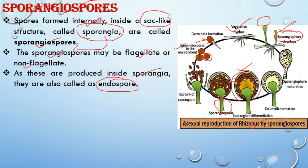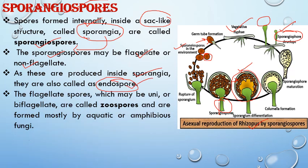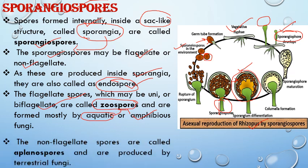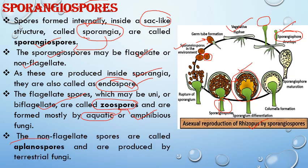The flagellated spores, which may be uniflagellate — having a single flagellum — or biflagellate, are known as zoospores and are formed mostly in case of aquatic or amphibious fungi. The non-flagellated spores are known as aplanospores and are produced by terrestrial fungi, carried from one place to another with the help of wind or other agencies.